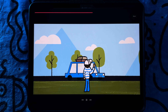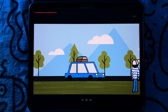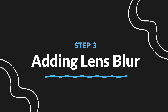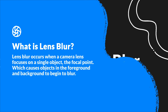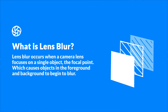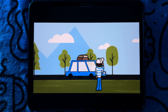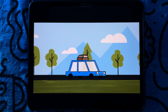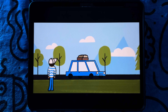Now we have all of our foreground and background elements animated. Now I'm going to show you how to play with the camera focus of the animation using the new lens blur feature. Lens blur occurs when a camera lens focuses on a single object — the focal point — which causes objects in the background and foreground to begin to blur. The further away an object is from the focal point, the blurrier it becomes. For my animation I want the car to be the focal point, which means that the background and foreground character will appear blurry.